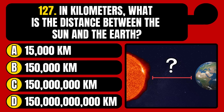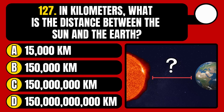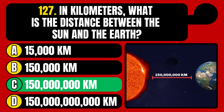In kilometers, what is the distance between the sun and the earth? 15,000 kilometers, 150,000 kilometers, 150 million kilometers, or 150 billion kilometers? The correct answer is option C, 150 million kilometers.